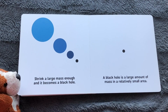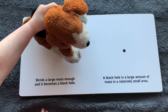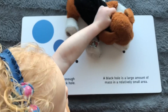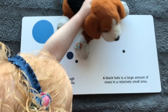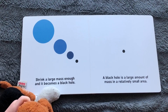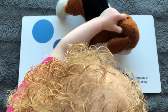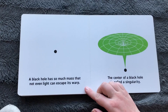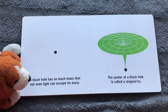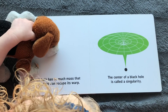Shrink a large mass enough — shrink, shrink, shrink — and it becomes a black hole. Are you sniffing that black hole, sweet puppy? A black hole is a large amount of mass in a relatively small area. A black hole has so much mass that not even light can escape its warp.